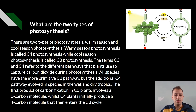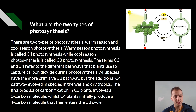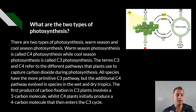There are two types of photosynthesis: warm season and cool season photosynthesis. Warm season photosynthesis is called C4 photosynthesis, while cool season photosynthesis is called C3 photosynthesis. The terms C3 and C4 refer to the different pathways plants use to capture carbon dioxide during photosynthesis.